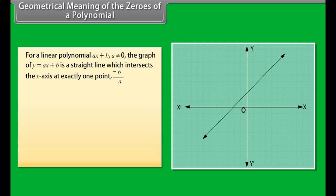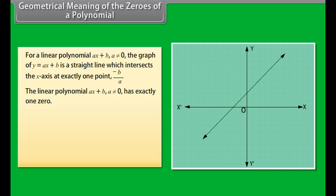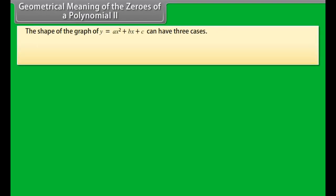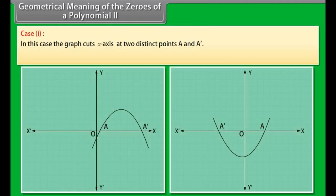For a linear polynomial ax + b, where a ≠ 0, the graph of y = ax + b is a straight line which intersects the x-axis at exactly one point, −b/a. Therefore, the linear polynomial ax + b has exactly one zero. The polynomial equation y = ax² + bx + c is a quadratic equation, and the graph of a quadratic equation is a parabolic curve.